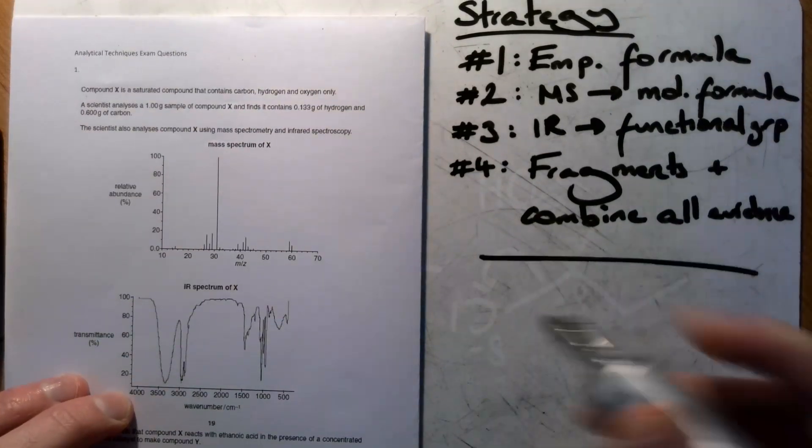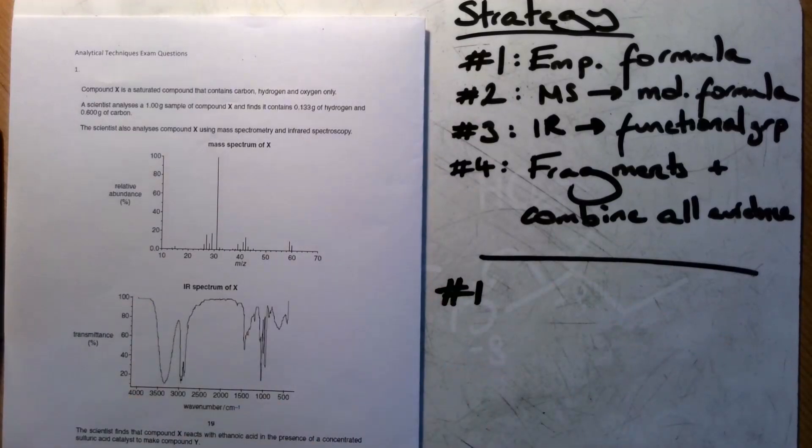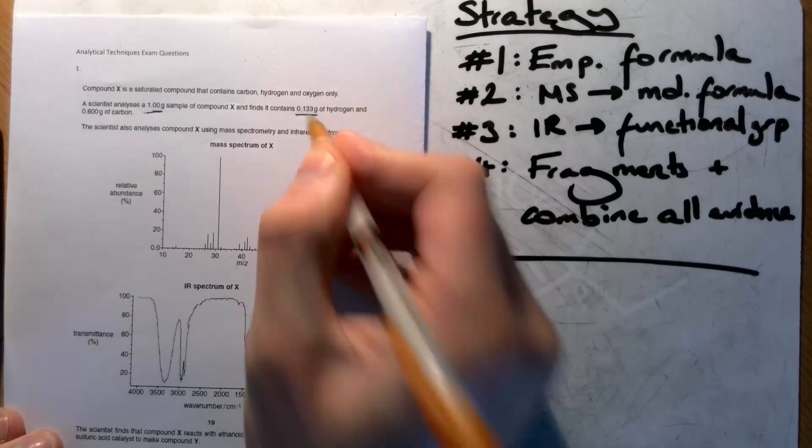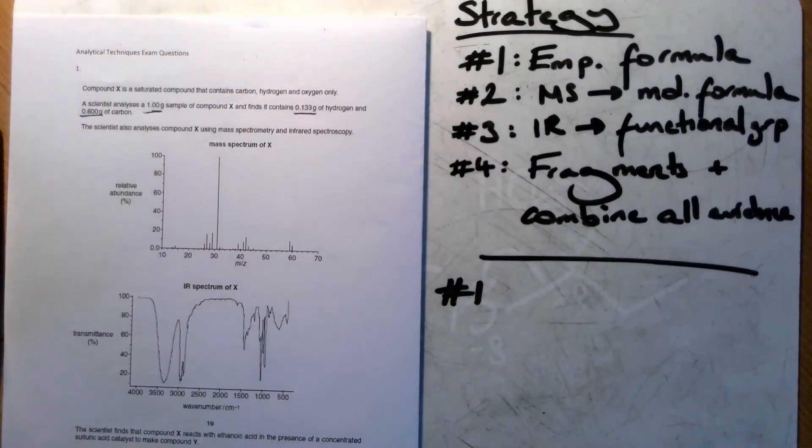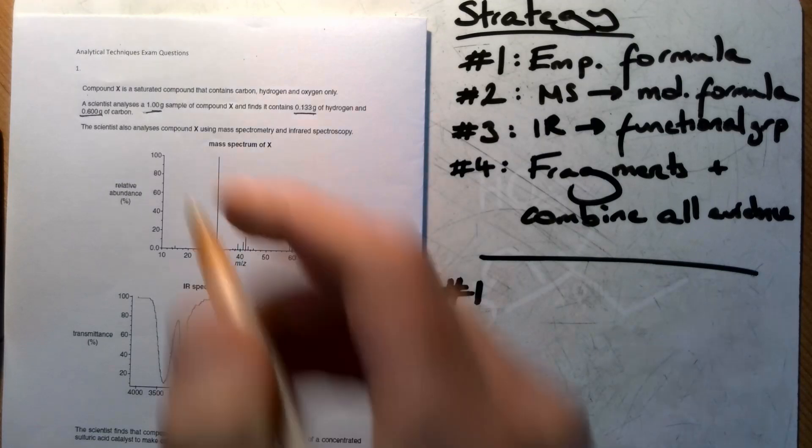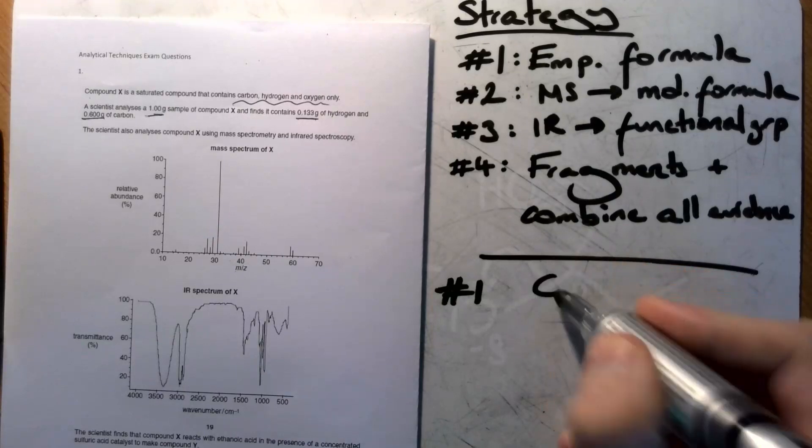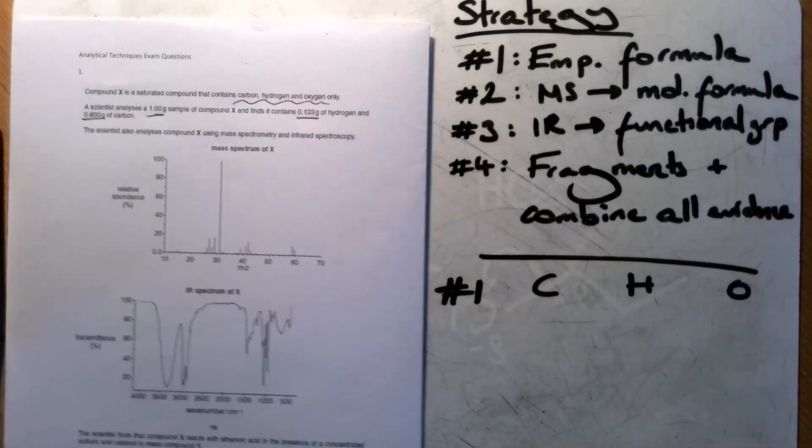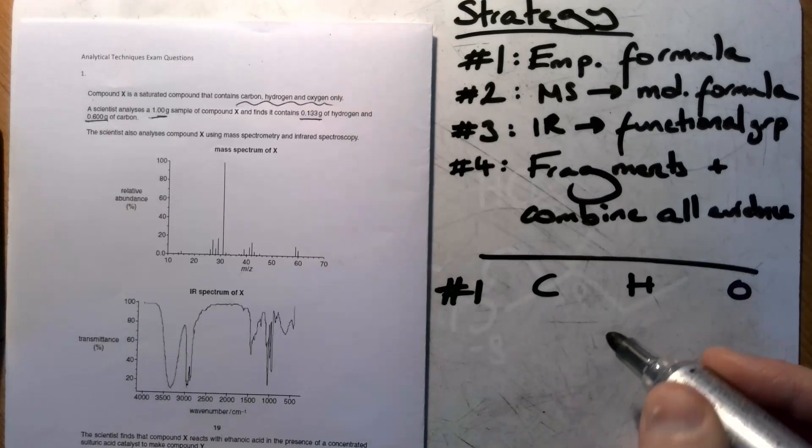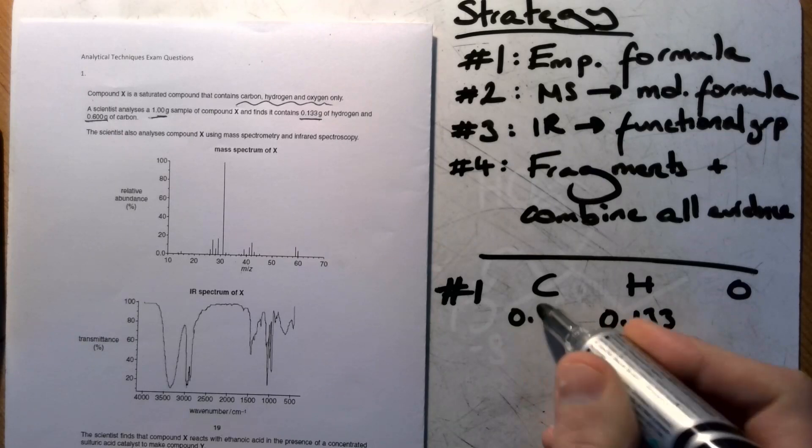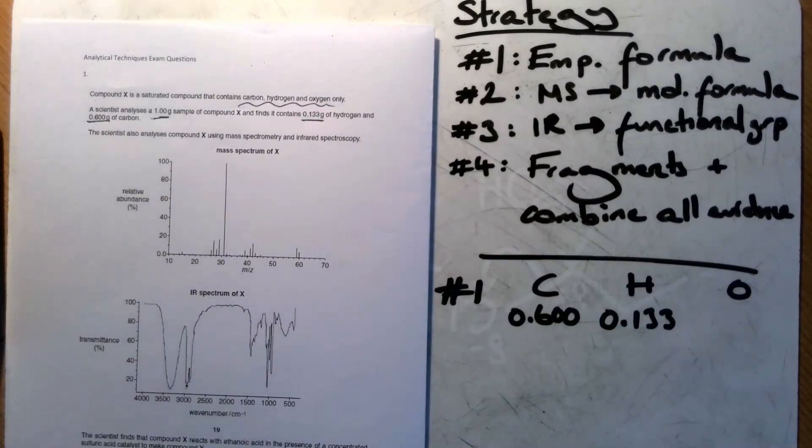So first of all we'll look at number one. They've given us here one gram of the compound. It's got 0.133 grams of hydrogen, 0.6 grams of carbon, and so the rest, because it's got carbon, hydrogen and oxygen, must be oxygen. So number one is to do CHO for our empirical formula. So we've got 0.133 of hydrogen, 0.6 of carbon, and then the rest must be oxygen. So I'm going to work that out on my calculator now.